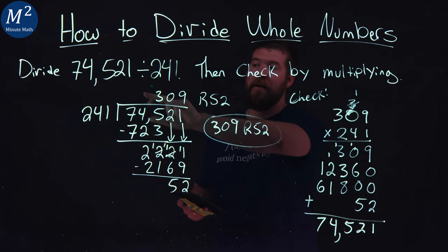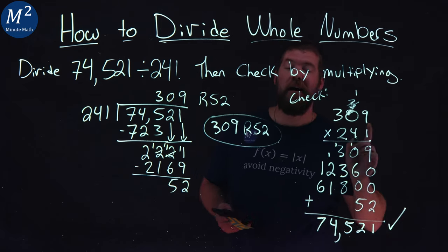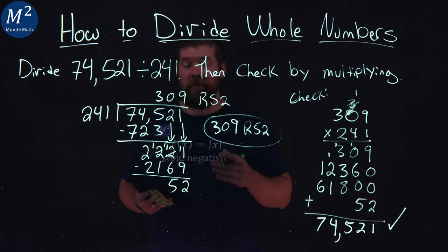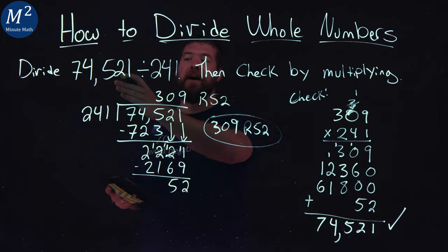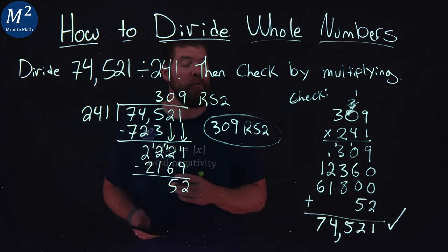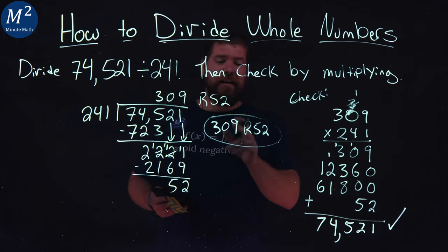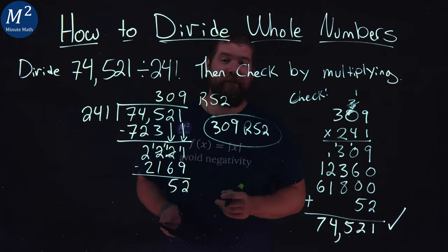Did we get 74,521? We did. Our check works out. Meaning, our final answer here when we take 74,521 divided by 241 is 309 with a remainder of 52.